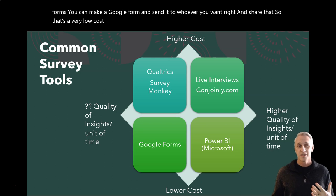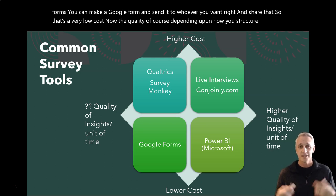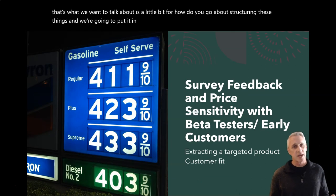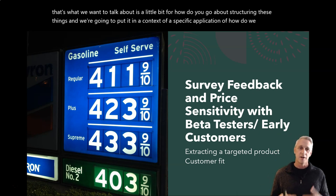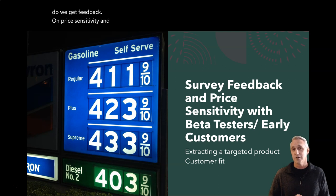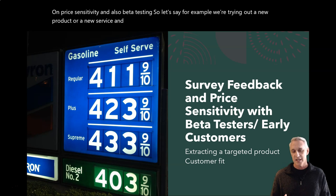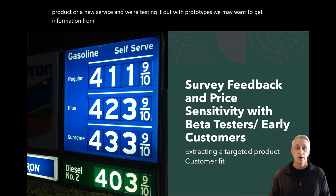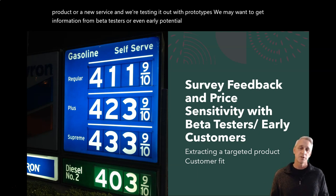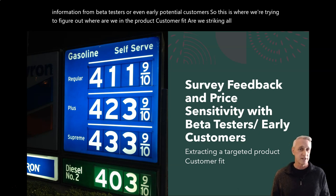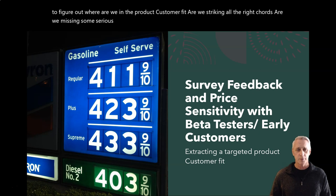The quality depends upon how you structure it. So that's what we want to talk about — how do you go about structuring these surveys? We're going to put it in the context of a specific application: how do we get feedback on price sensitivity and beta testing? Let's say we're trying out a new product or service and testing it out with prototypes. We may want to get information from beta testers or even early potential customers to figure out where we are in the product-customer fit. Are we striking all the right chords? Are we missing some serious things?